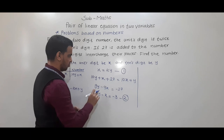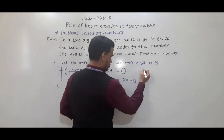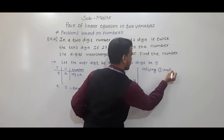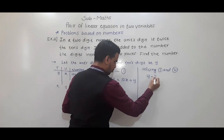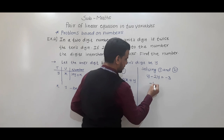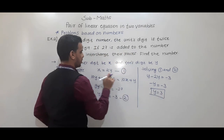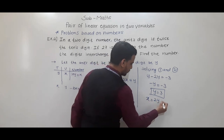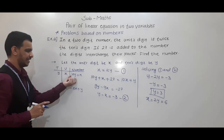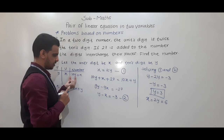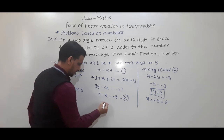Now solving equations 1 and 2: x equals 2y, so substituting directly into equation 2. We get 2y minus y equals minus 3... wait, solving gives y equals 3. Substituting y equals 3 back: x equals 2y, so x equals 6. Now x equals 6, y equals 3, and the original number is 10y plus x: 10 into 3 plus 6 equals 36.